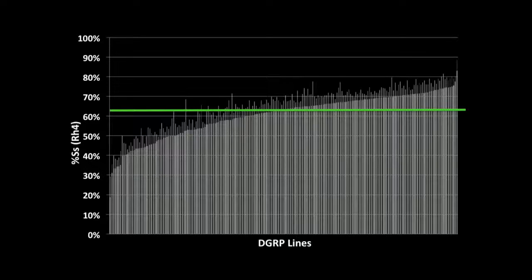This is what the data looks like. You can see there's a wide variation. Along the x-axis, we have the DGRP lines in rank order by their spineless expression frequency. You can see that it ranges anywhere from about 16 to 80% spineless, with this green bar representing what our lab stock would be.